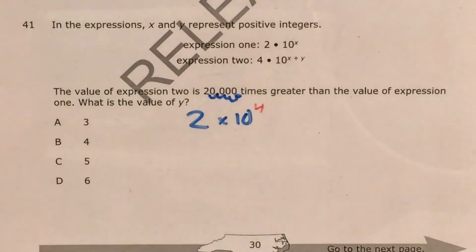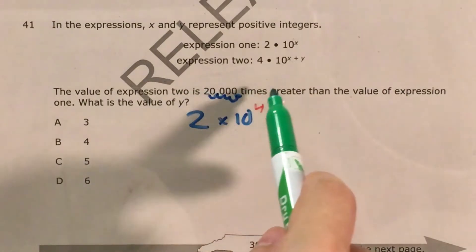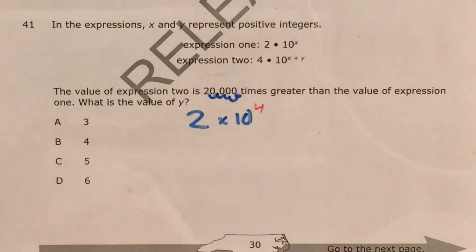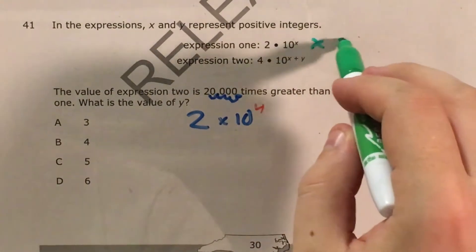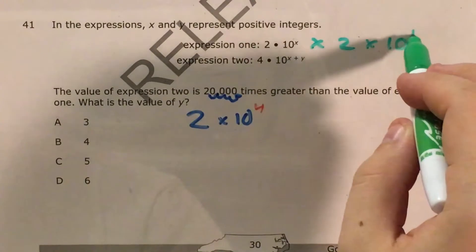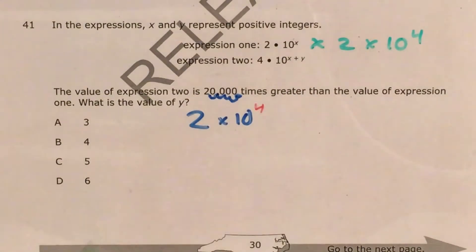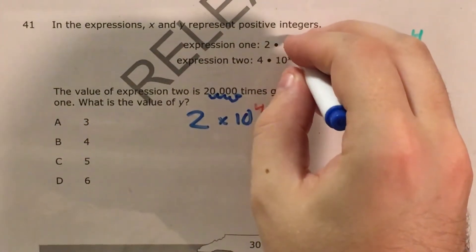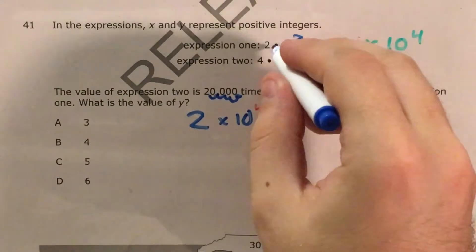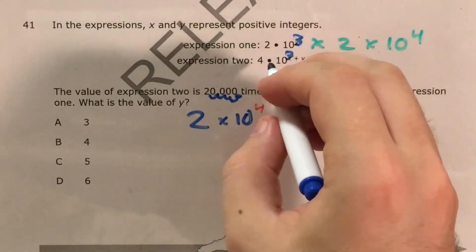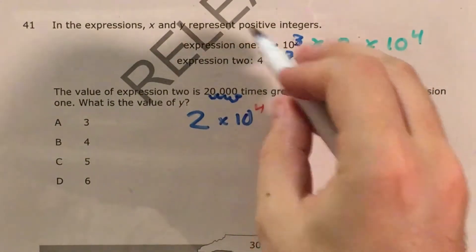Now I'll look at the problem and read that the value of expression 2 is 20,000 times greater than the value of expression 1. So which means I'm going to take expression 1 and multiply it by 2 times 10 to the 4th and get expression 2. Now it doesn't give a number for x. A nice way to cheat with these problems is as long as you pick the same number for x, you can use whatever you want, so I'll go ahead and use 3. So this is now 2 times 10 to the 3rd, and this is now 4 times 10 to the 3 plus y.